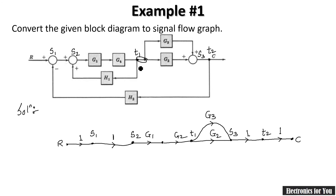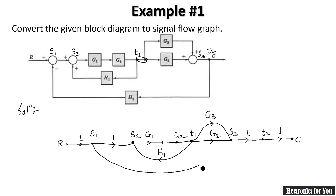There is also a connection between T1 and S2 with feedback gain H1 — I connect them with H1. Between T2 and S1 the gain is H2, and since it is negative feedback, H2 must carry a negative sign. This completes example one, where we have converted a block diagram to a signal flow graph.